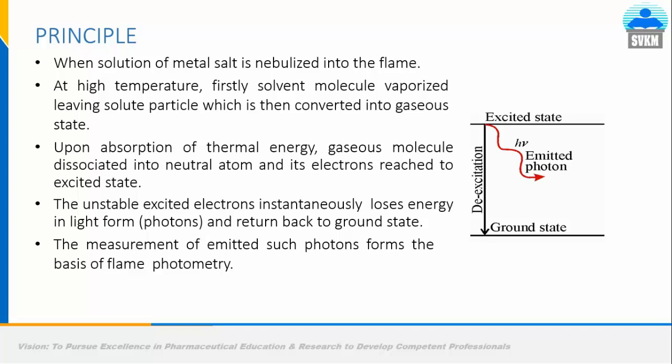The principle includes a solution of metallic salt being nebulized into a flame at high temperature. First, the solvent molecule is vaporized, leaving the solute particle, which is then converted into gaseous state upon absorption of thermal energy. The gaseous molecule dissociates into neutral atoms, and the electrons reach an excited state. When passed through the nebulizer, the solvent evaporates, leaving the metallic ions in gaseous state. The unstable excited electrons instantaneously lose energy in the form of photons and return to the ground state.